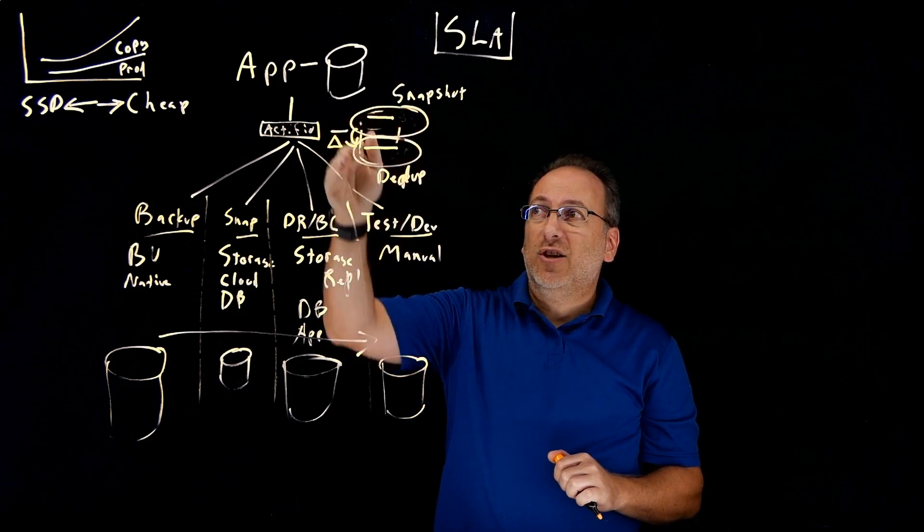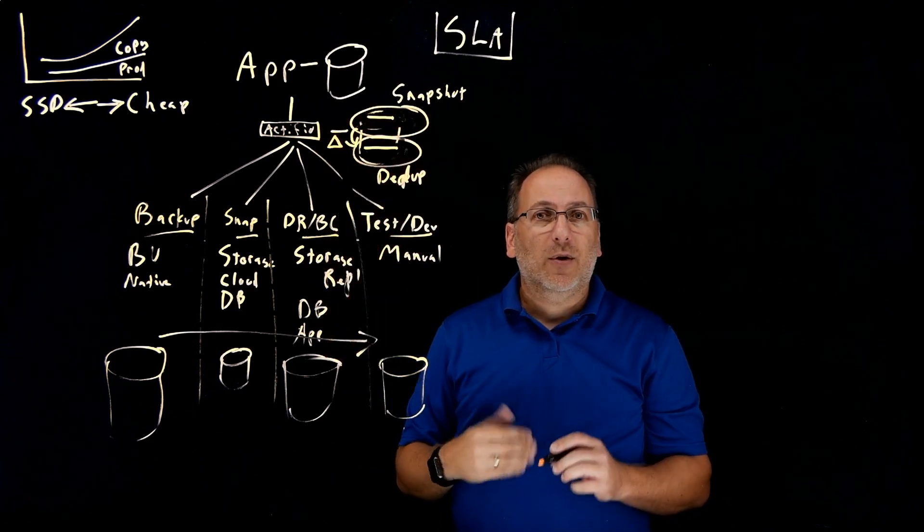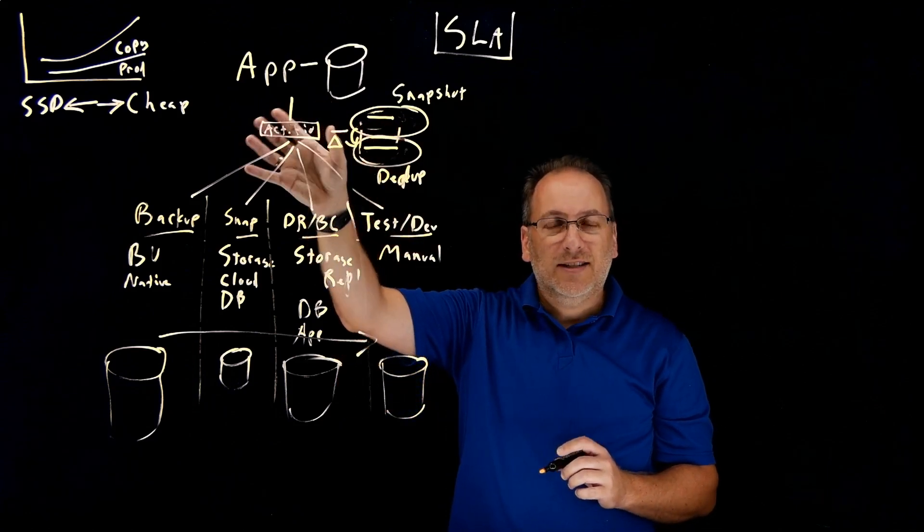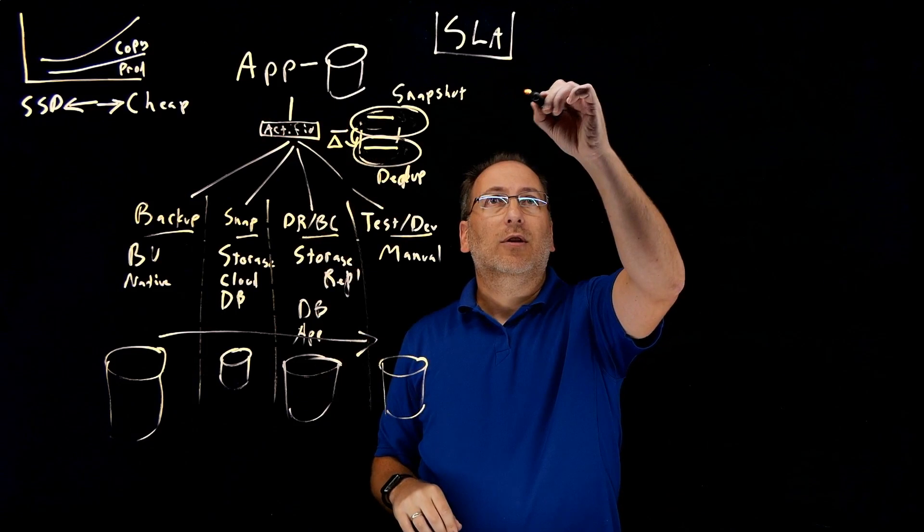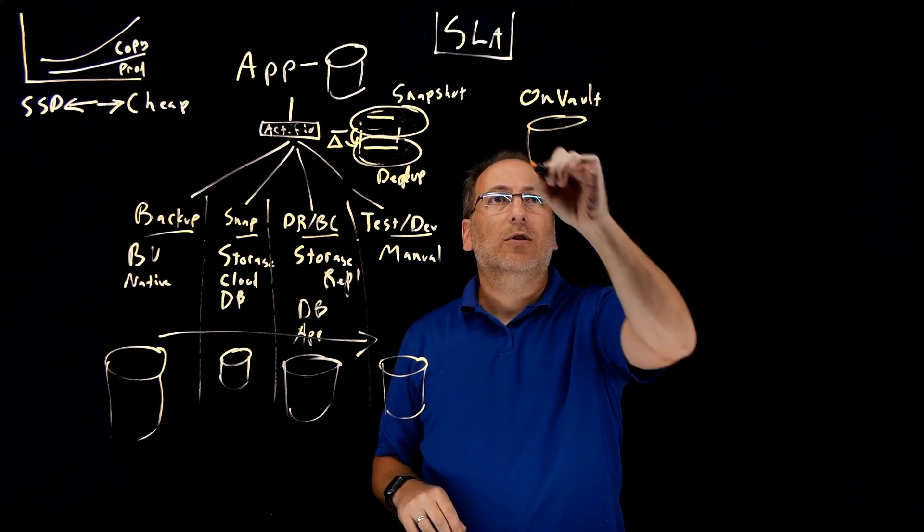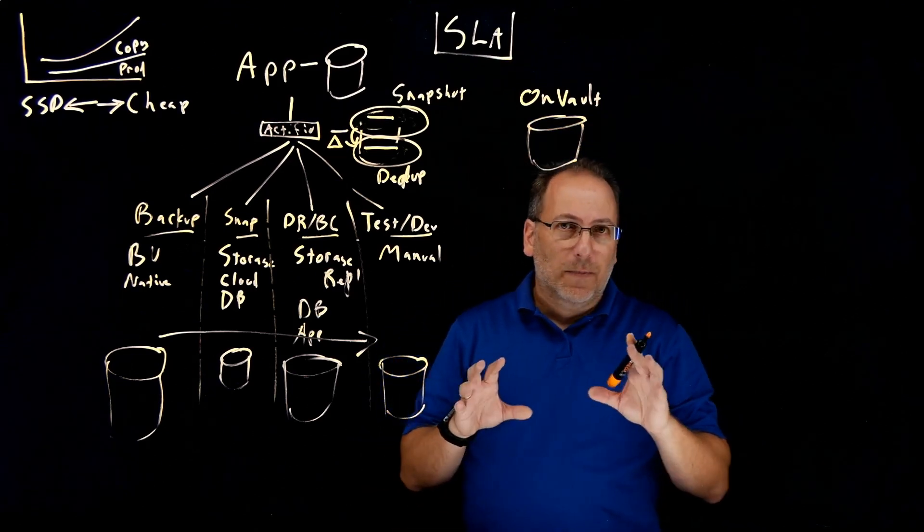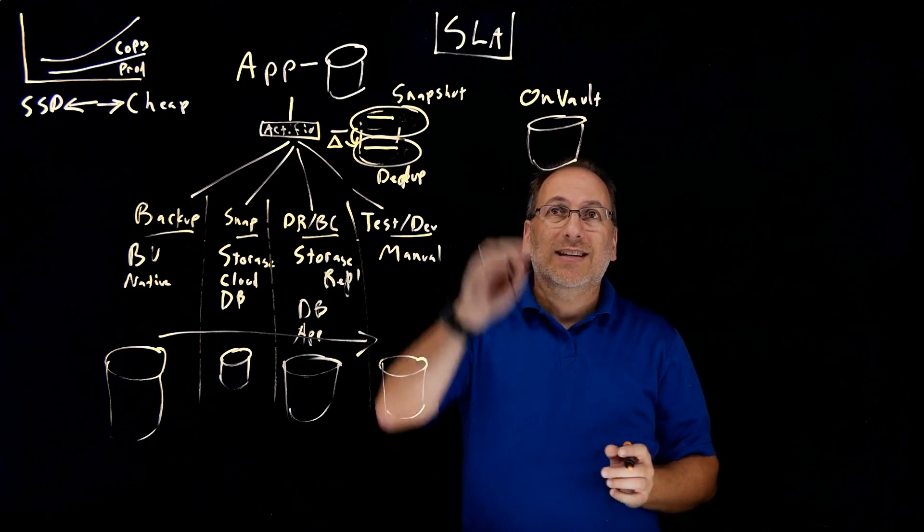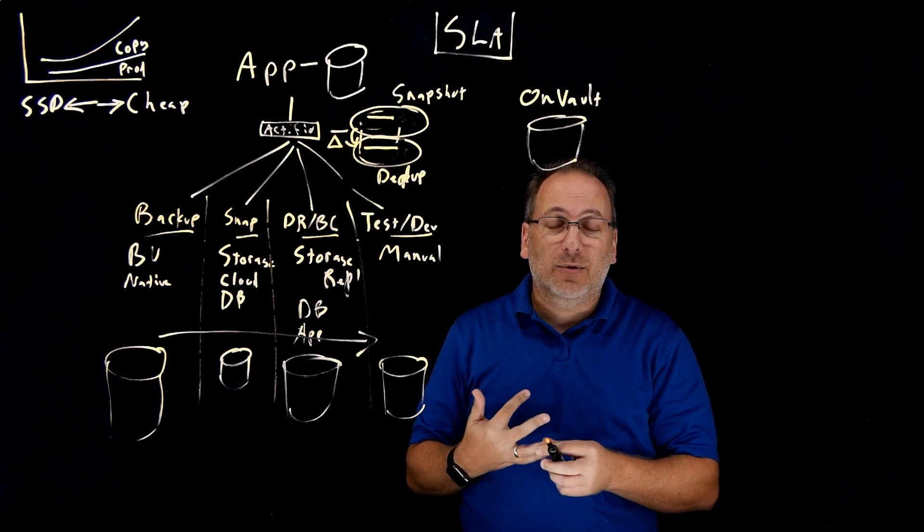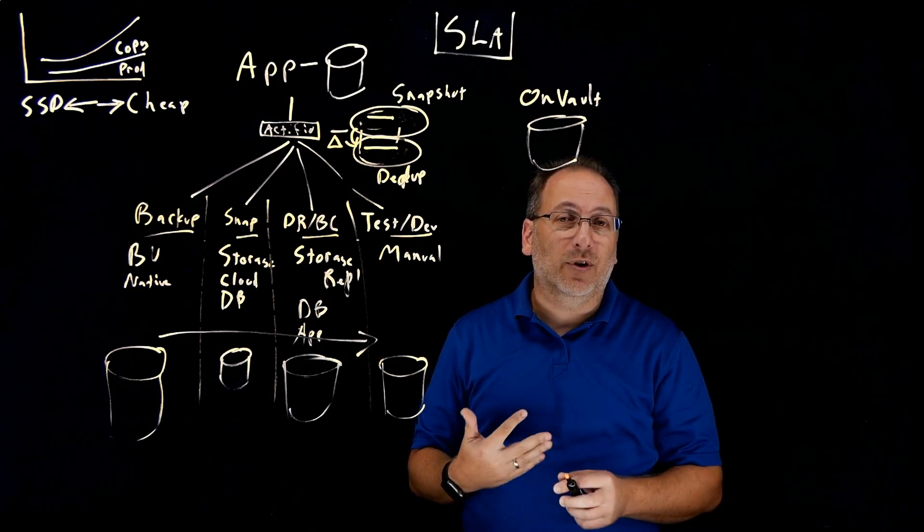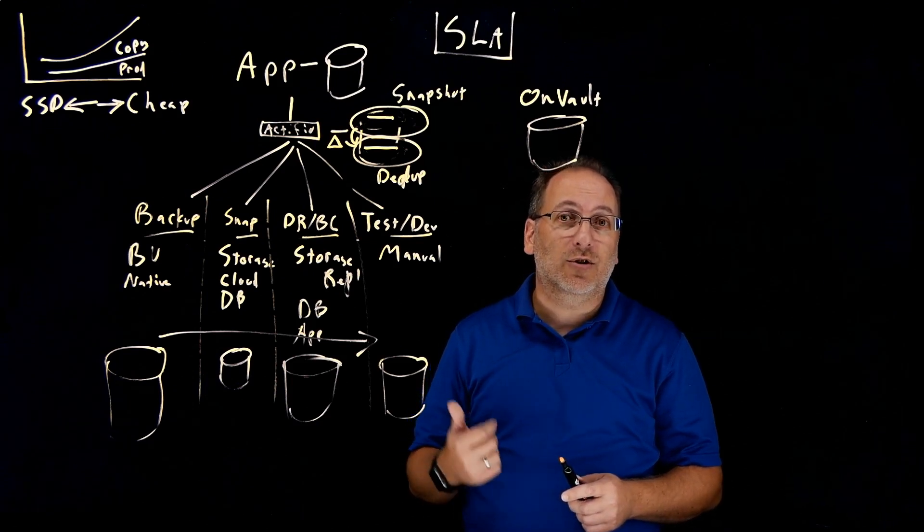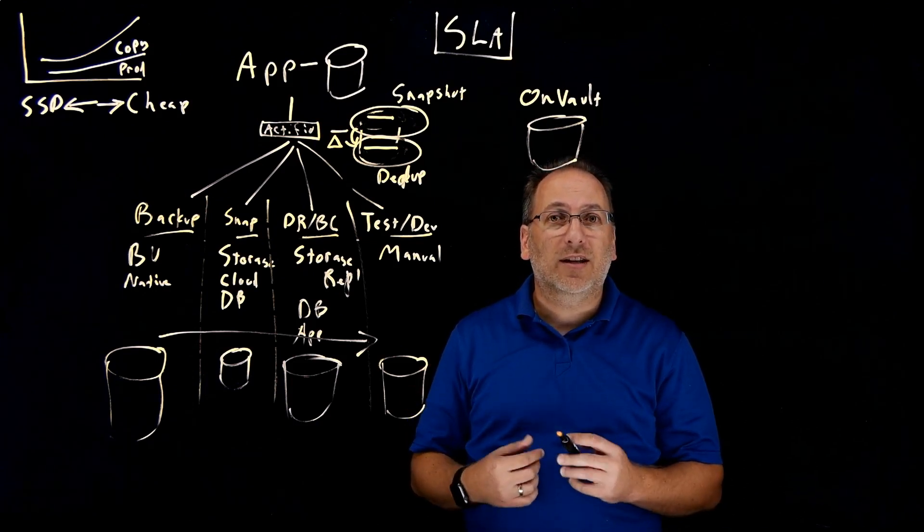Now, in addition to having a snapshot and a dedup pool, Actifio has a third type of pool. And unlike the other two, which are associated with a particular instance of Actifio, the third one is called OnVault. An OnVault pool is a pool of storage in a separate external storage location. Typically, this is object storage, and it can be in the cloud, something like Amazon S3 or Google Nearline or Azure Blob, for example. It also can be an on-premise object store, like IBM Cloud Object Storage, or Scality, or any of the other products that exist out there.